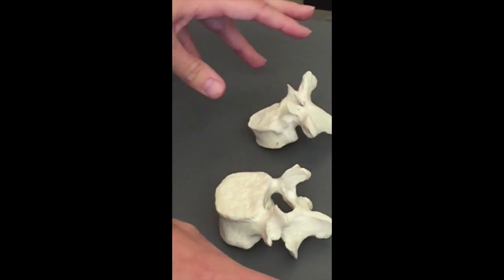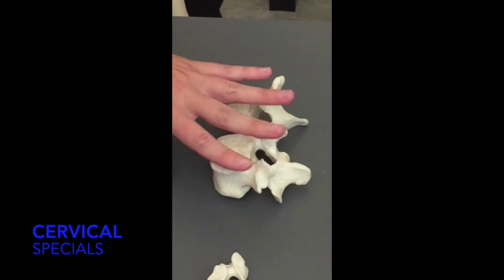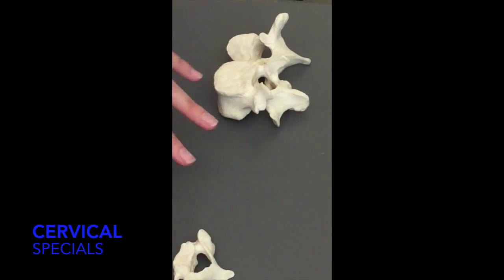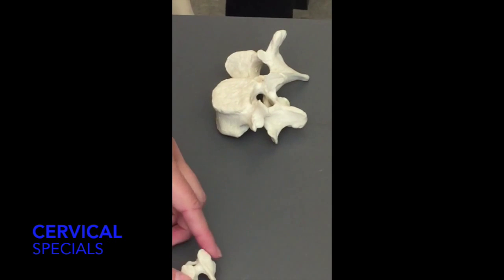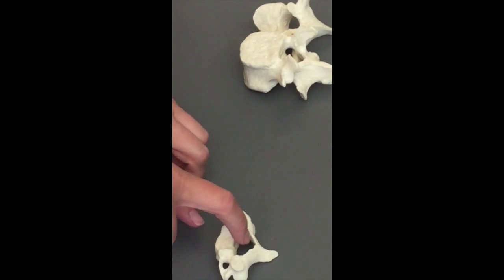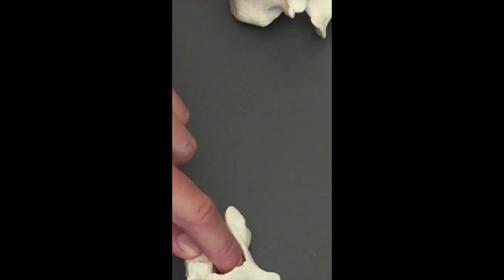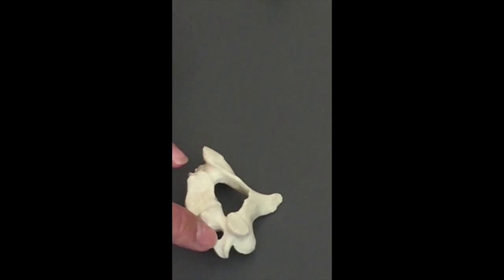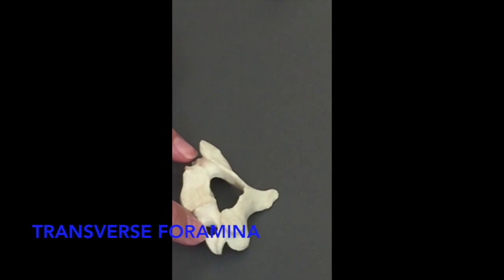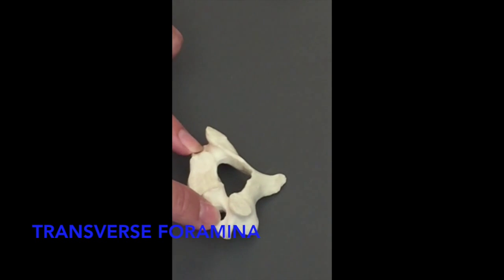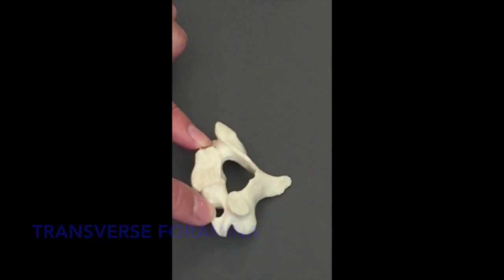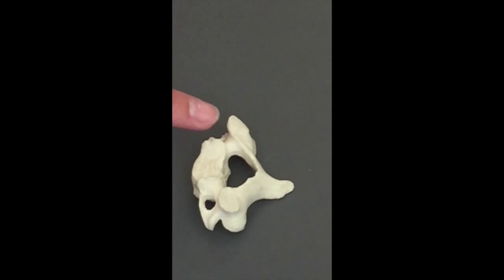Just in cervical vertebrae, there are a couple of special things. You still have your vertebral foramen - the one your spinal cord goes through - but now you have extra holes called transverse foramina on either side.